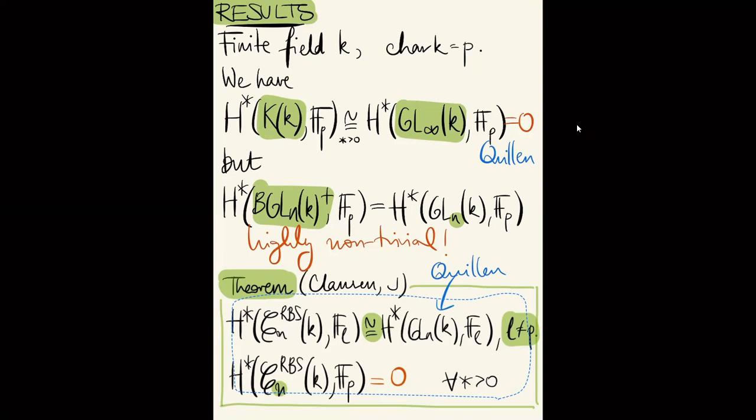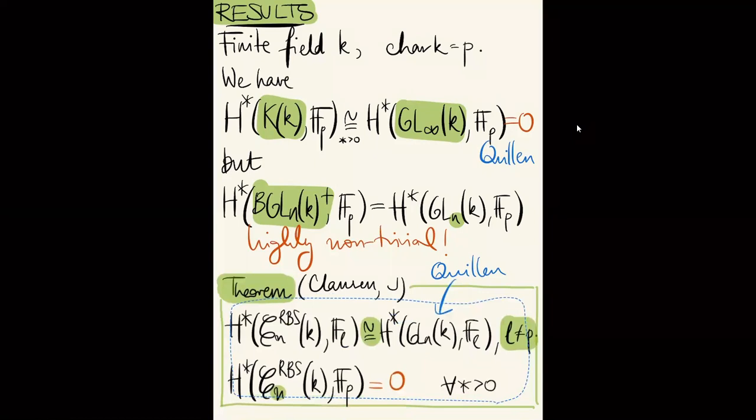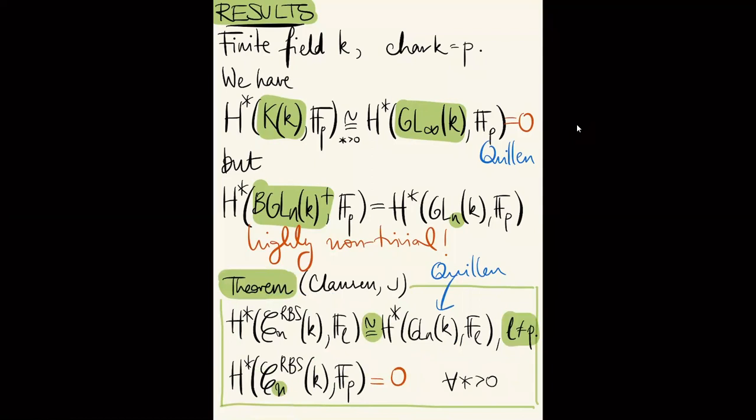Is the result computable — not just an abstract isomorphism? Not in what we've done so far — the cohomology classes are not yet made explicit. Let's thank her again. Maybe I can stop the recording and you can keep going with questions.